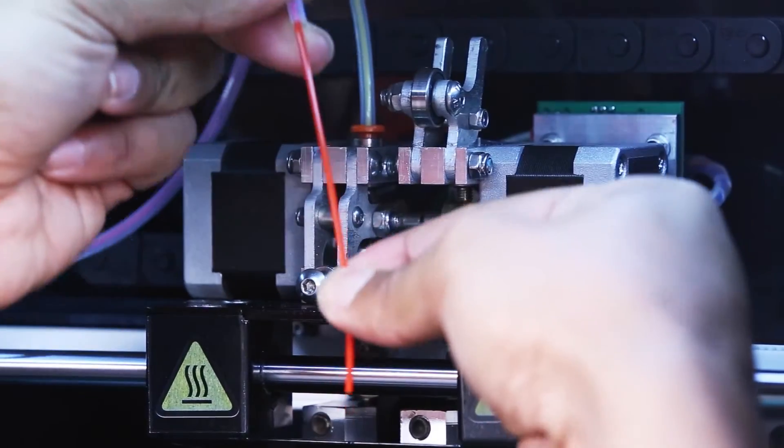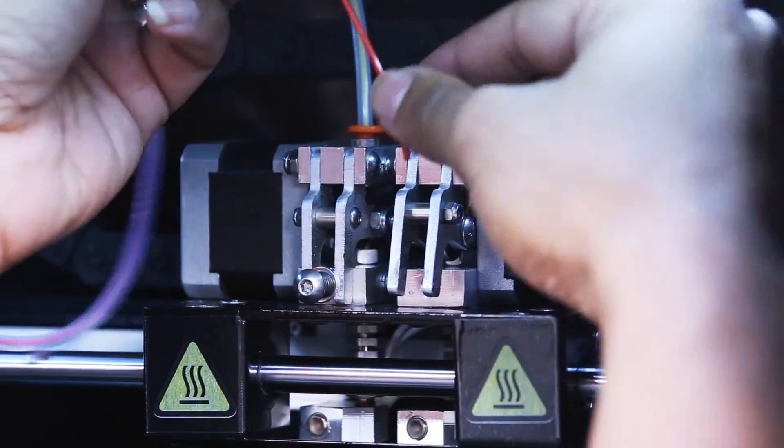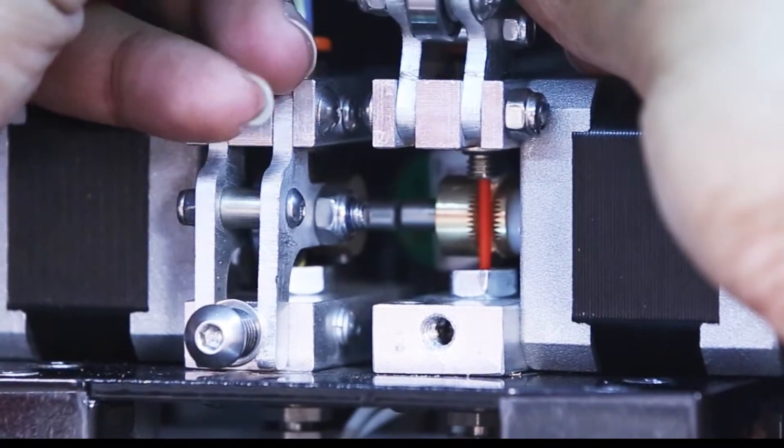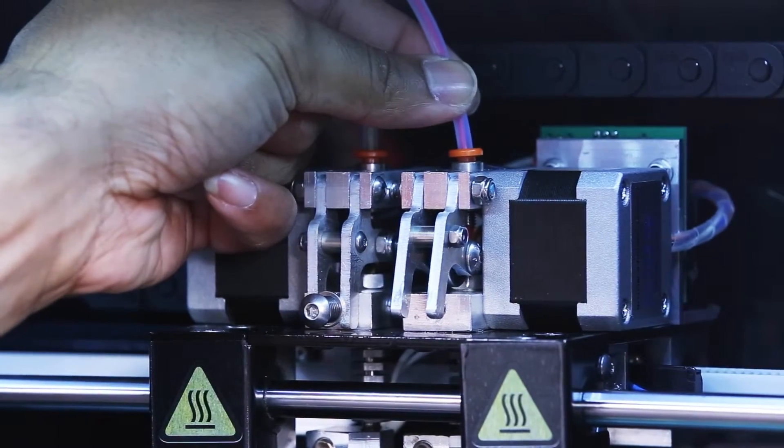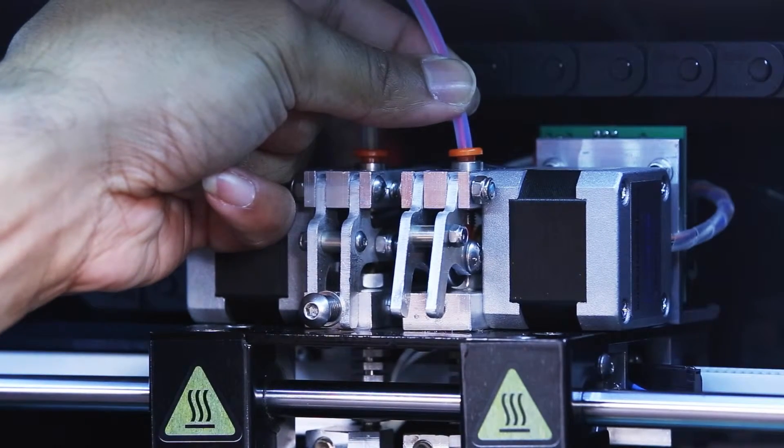Now feed the filament back through the orange washer and into the nozzle area, and push the plastic tube back into the orange washer to secure it. You will know if it is secure as you cannot pull it off without pressing the orange plastic washer downwards first.